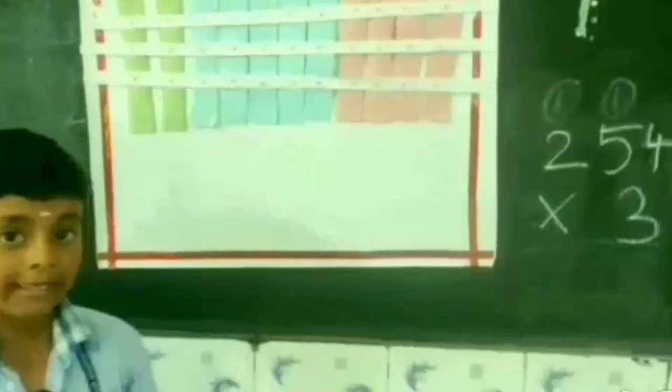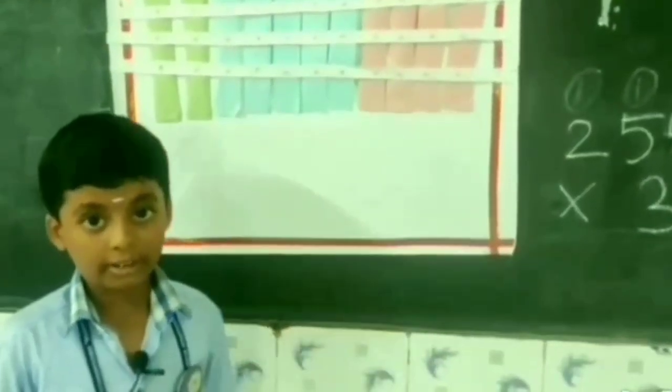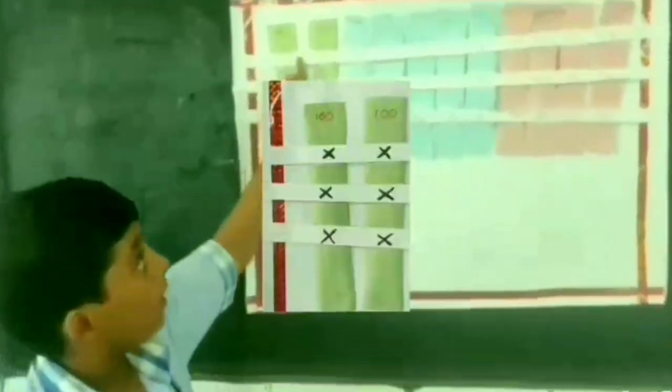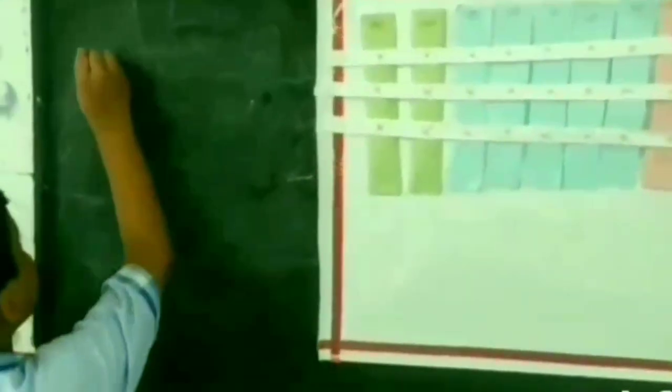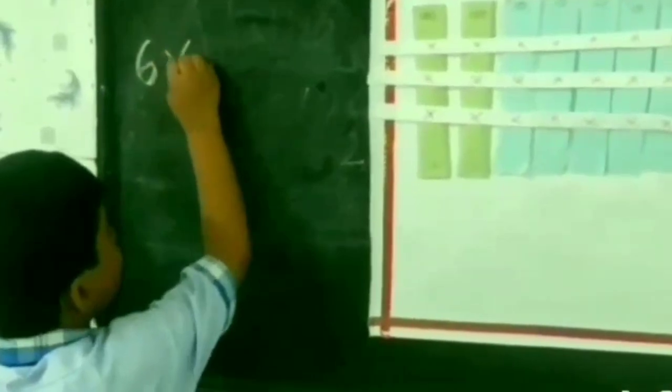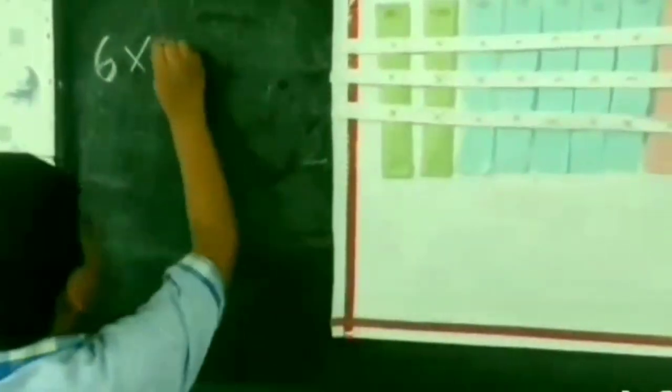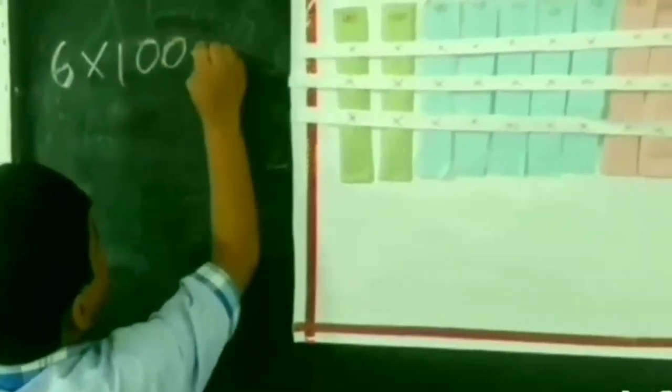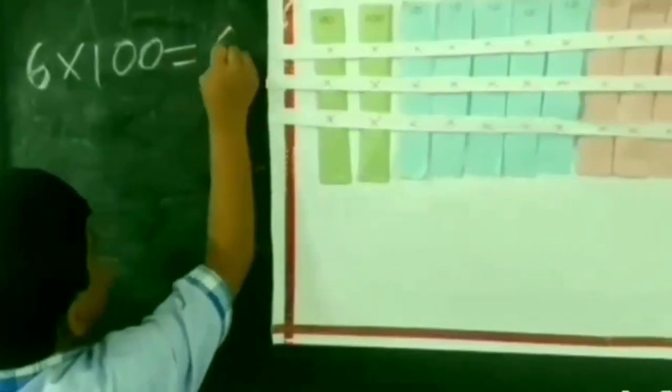Now, let us find the point of intersection. 1, 2, 3, 4, 5, 6. 6 into 100 is equal to 600.